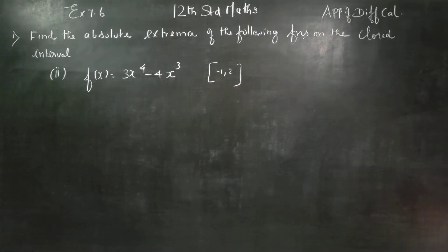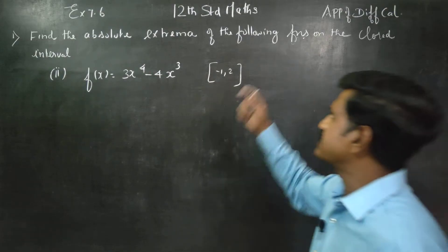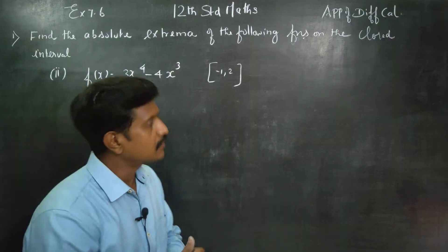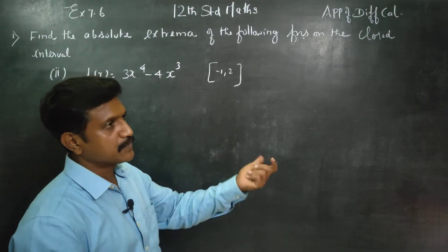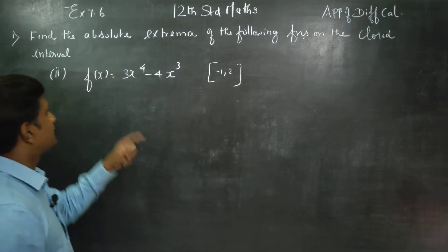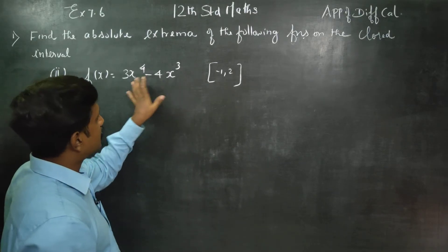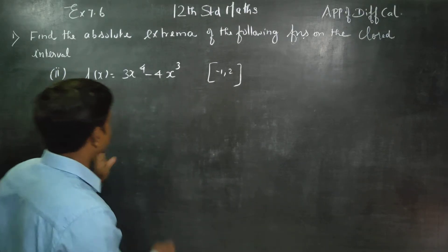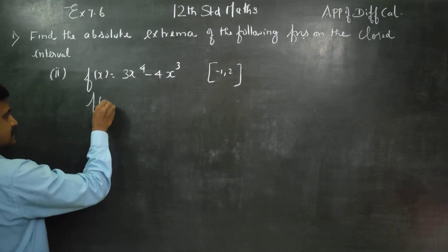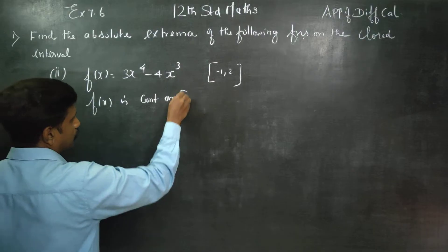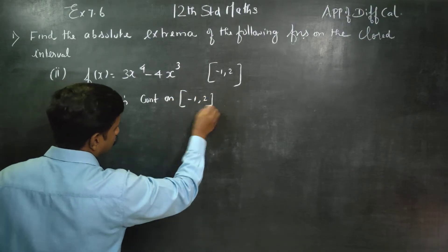Dear 12th standard students, I am Metro Karanagaran. In exercise number 7.6, sum number 1: find the absolute extrema of the following functions. The rule for finding absolute extrema — that is maxima and minima — requires f(x) to be continuous. It is a polynomial, an algebraic function, and f(x) is continuous on the interval [-1, 2].